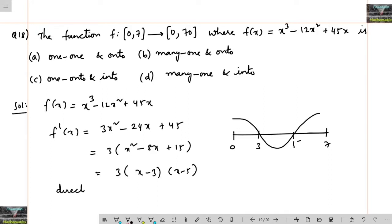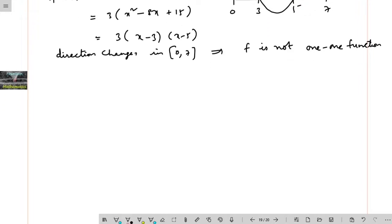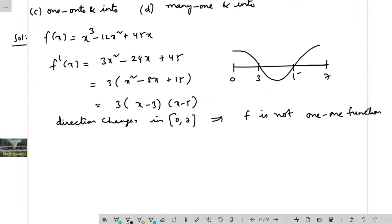Your f is changing, direction is changing. Direction changes in [0,7] and hence we can say this is not one-to-one. This is not a one-to-one function.